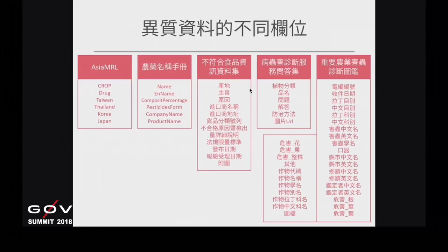因為要做跨國農藥殘留議題，在不同國家實際上能夠用的農藥品項跟殘留量是不一樣的。我們目前能夠找到台灣這部分的開放資料集。比較好的情況是，可以從進口商的名稱以及營業登記證的項目，去反推回一些實際上查詢時比較有辦法找到與其他資料庫之間關聯的資料。